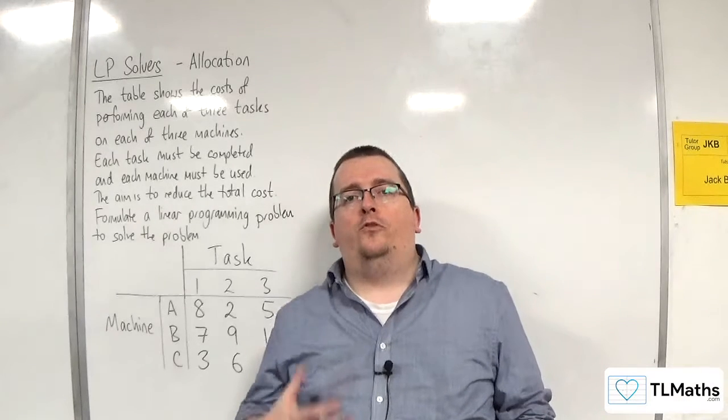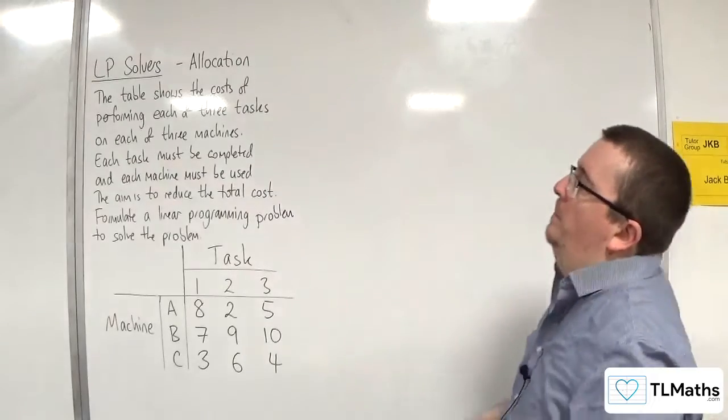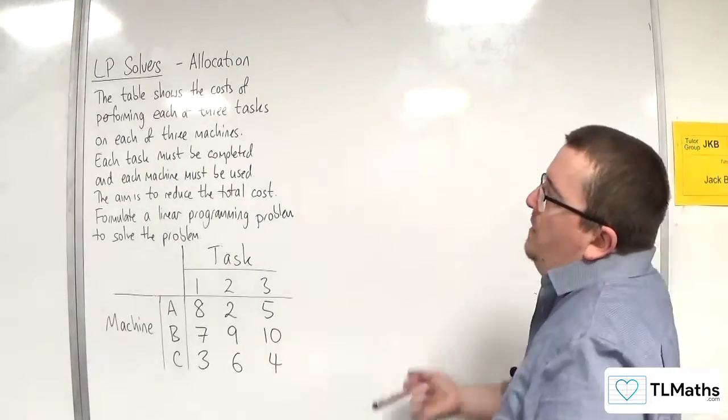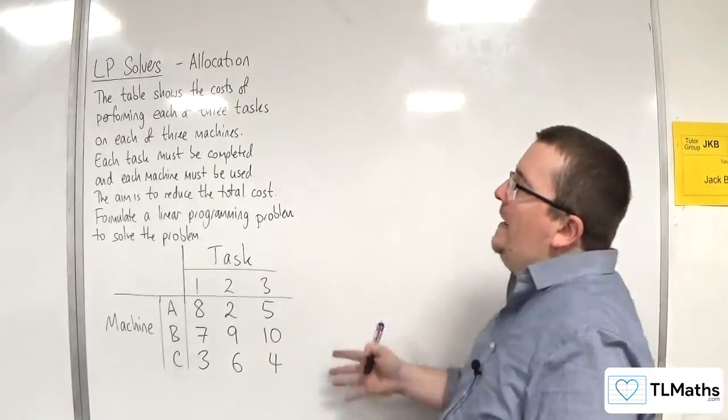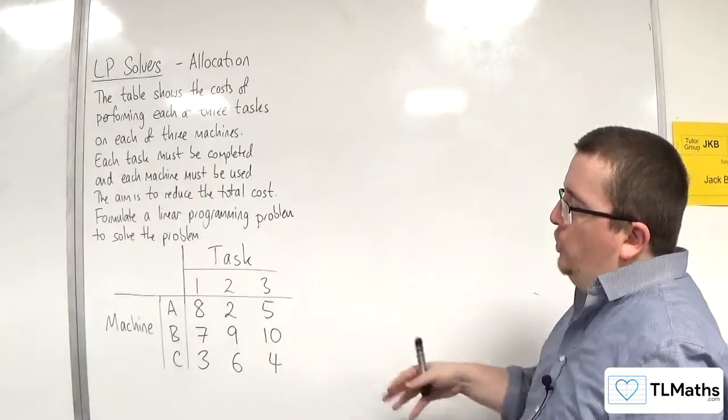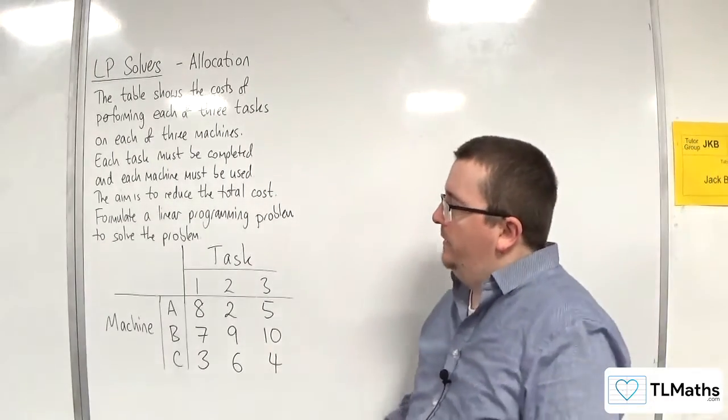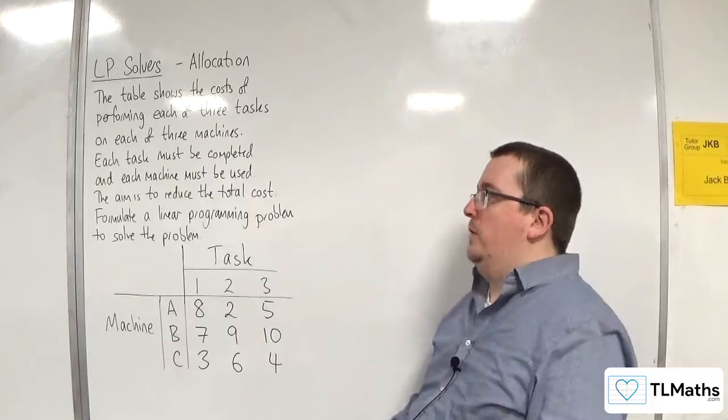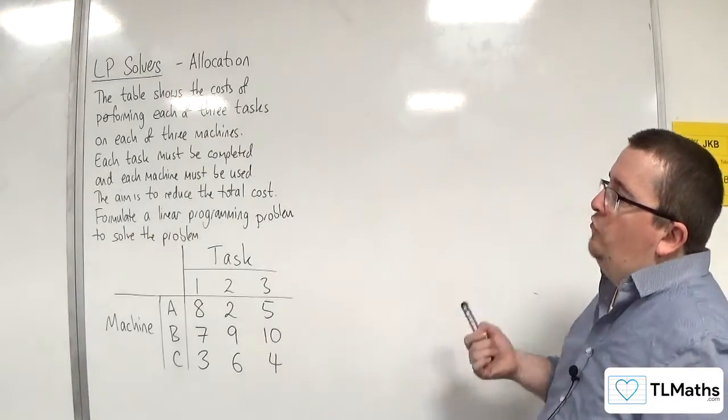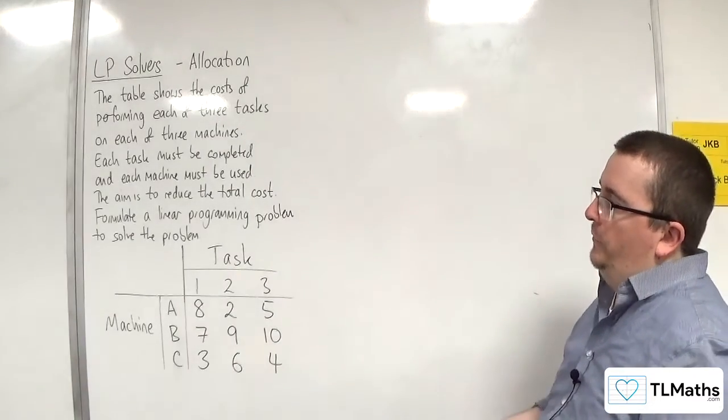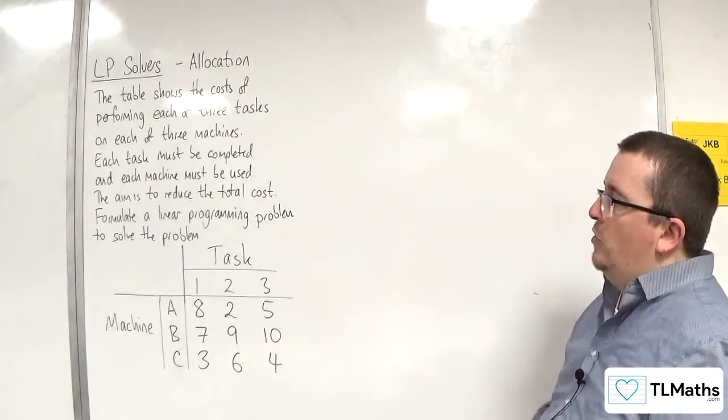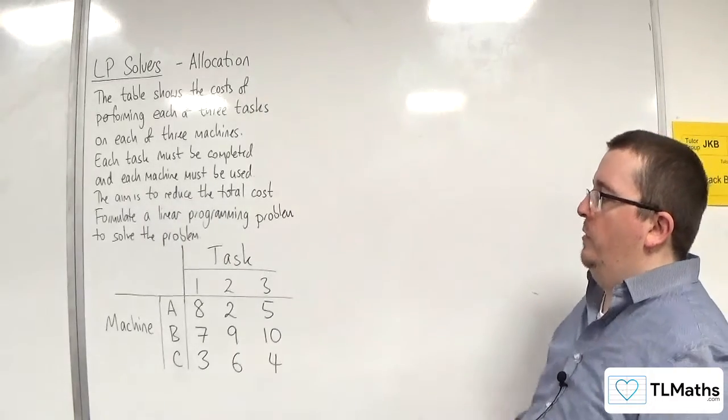In this video, we're going to look at what's referred to as an allocation problem. The table shows the costs of performing each of three tasks on each of three machines. Each task must be completed, and each machine must be used. The aim is to reduce the total cost. Formulate a linear programming problem to solve the problem.